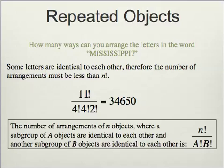The key formula here is that the number of arrangements of n objects where a subgroup of 'a' objects are identical to each other, and perhaps another subgroup of 'b' objects are identical to each other, is the total n factorial divided by a factorial times b factorial. There may be only one set of identical objects or a whole bunch, but that's the general way you set up the formula.